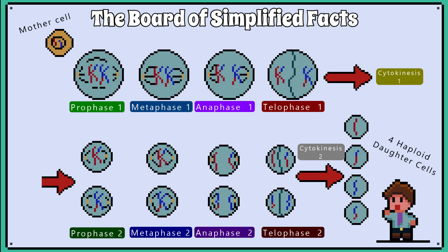Now, for a more detailed look at meiosis — which is more than you need to know for your exam, but would be useful if you want to study biology further, for example at A-level — meiosis produces four daughter cells, which means the mother cell needs to divide twice, and we will see all the stages happen twice, labelled as prophase 1 and prophase 2, and so forth.